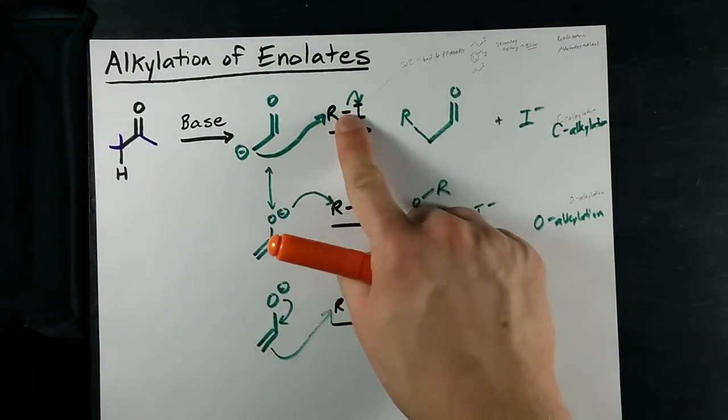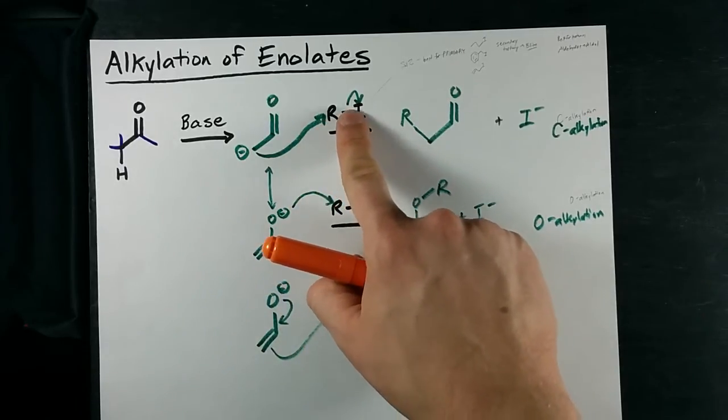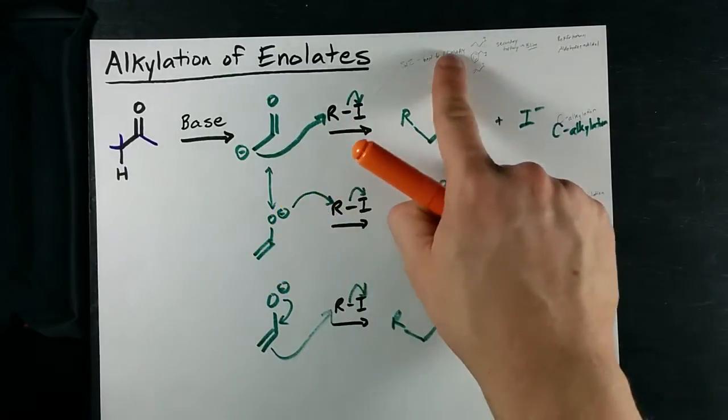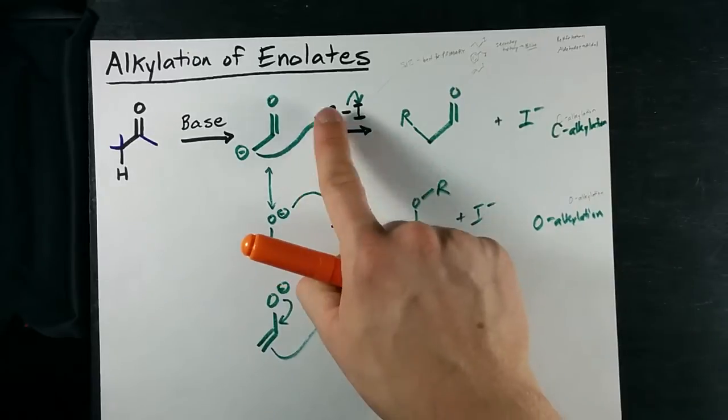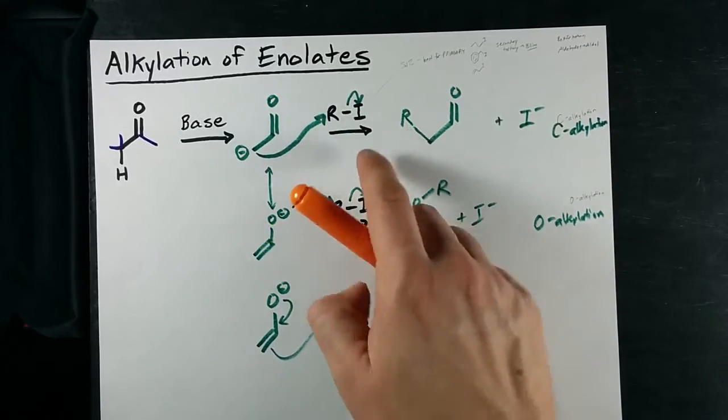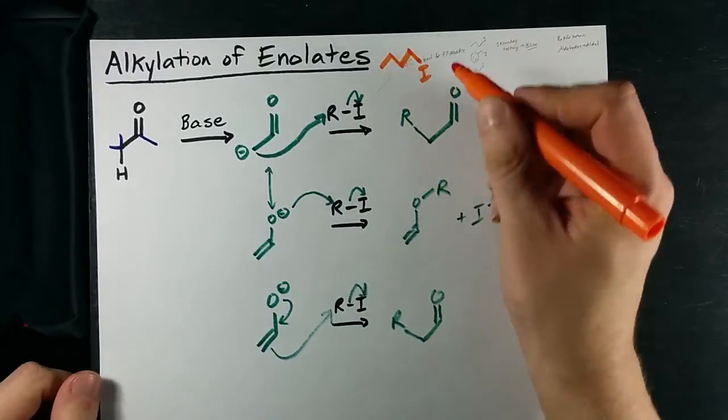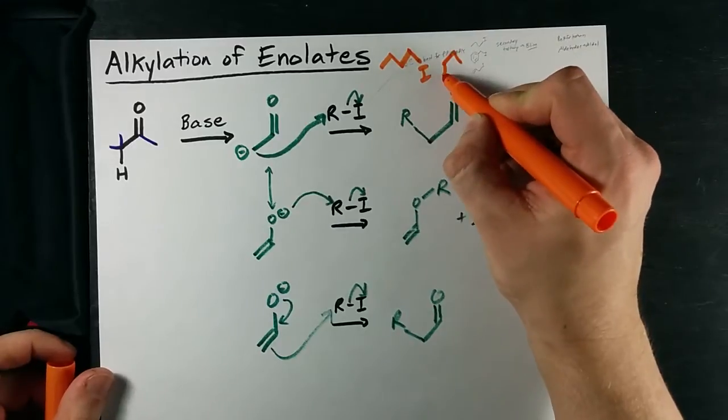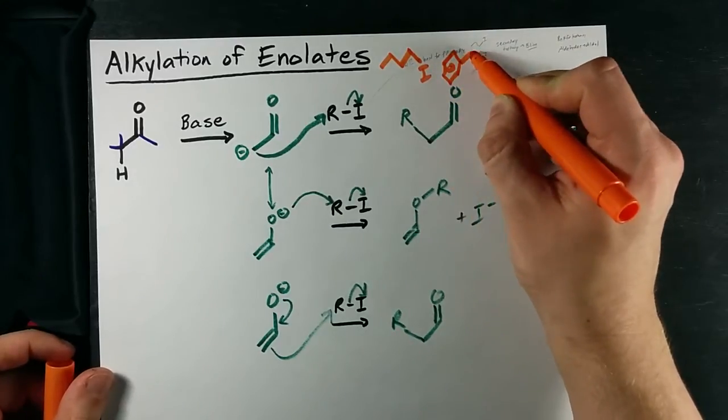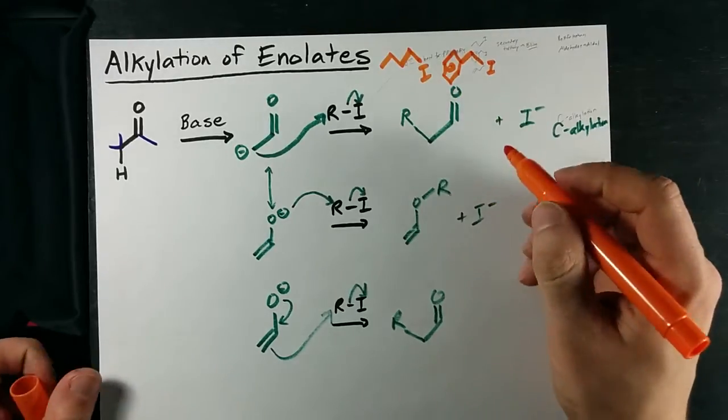This attacks the R at the same time that the I leaves, and it works best on primary alkyl halides. What that means is that you're best to have maybe a straight chain of carbons with an I on it, or you could have a benzene with a carbon and then the halogen attached to that carbon.